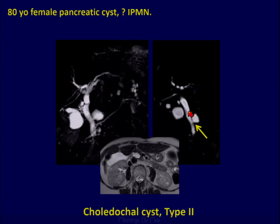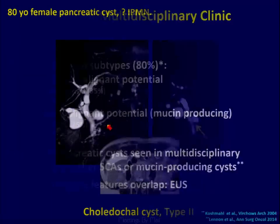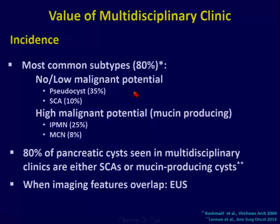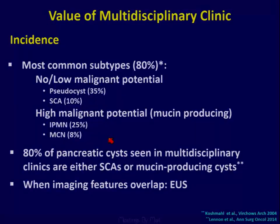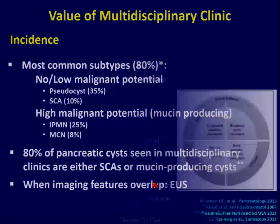Now we just can see the communication. So what's the value of a multidisciplinary clinic? Most of the cysts we see fall into two categories: either no or low malignant potential — such as pseudocyst or serous cyst — or high malignant potential with mucinous component, including IPMNs and mucinous cystic neoplasms. In a multidisciplinary clinic, we tend to distinguish between serous and mucinous cystic neoplasms and often send patients to EUS.